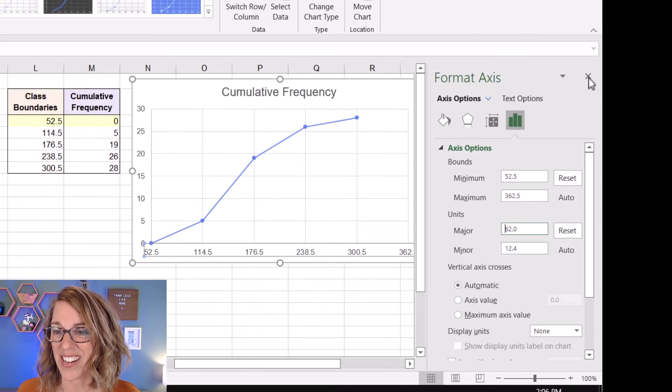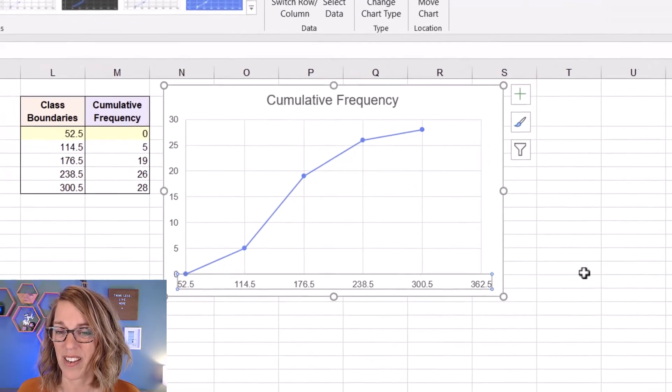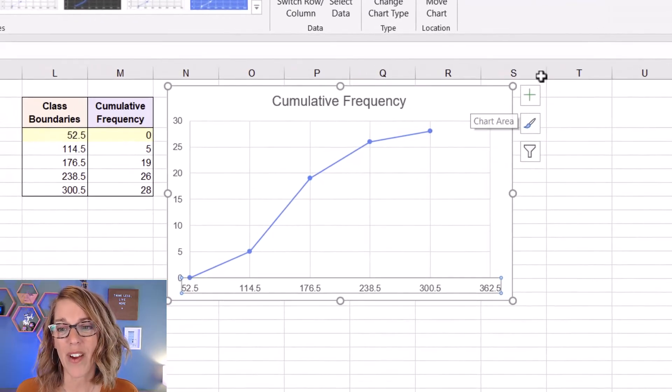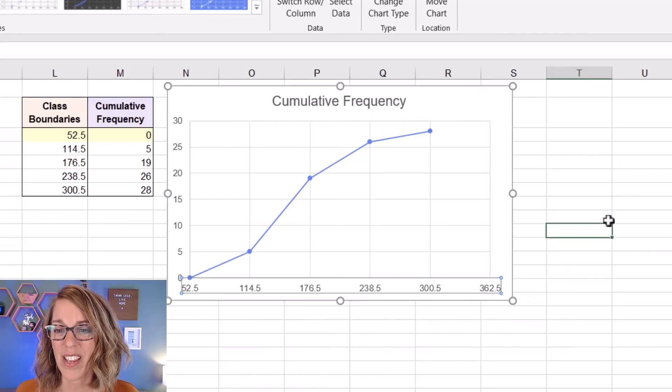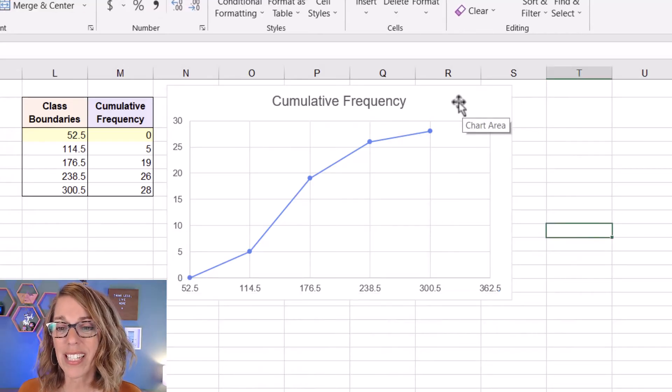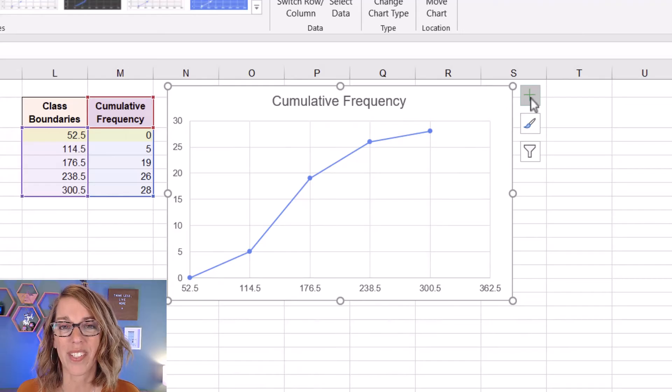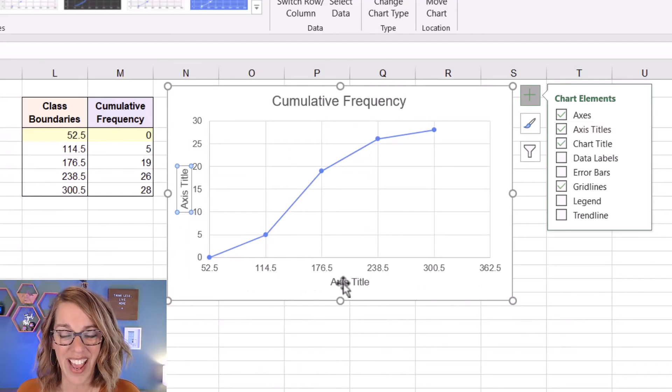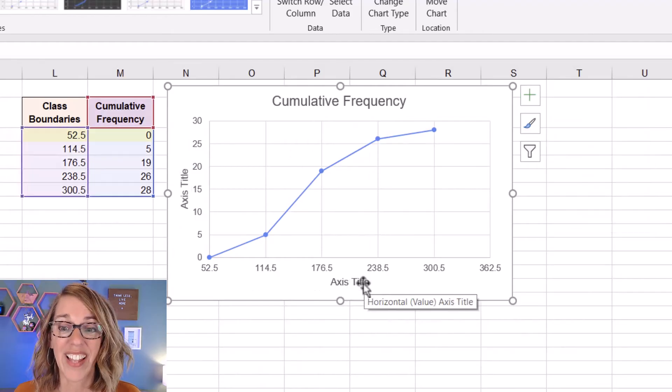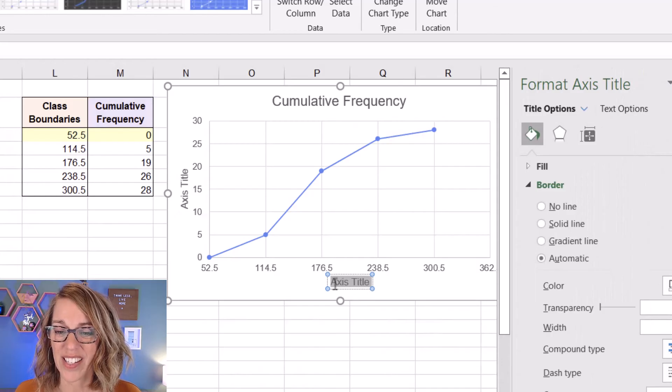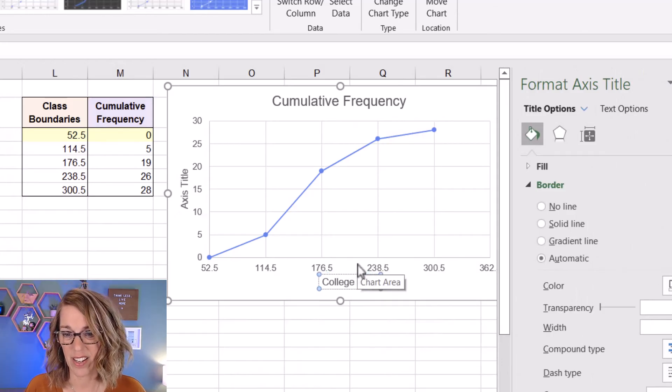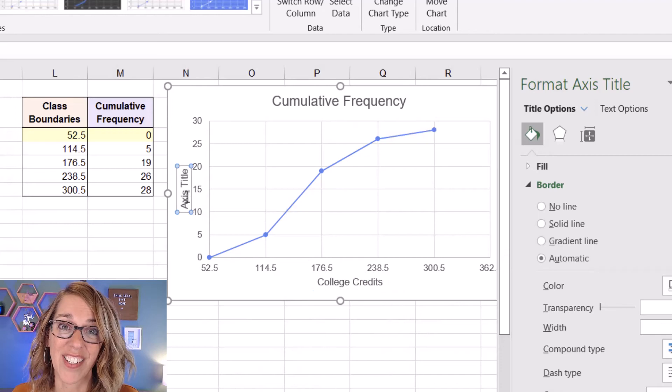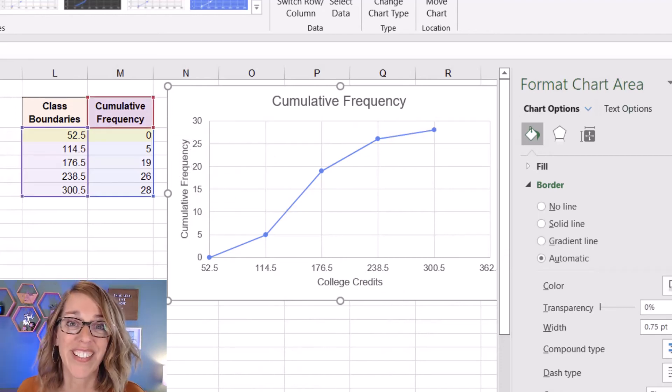And there's a few other things that I want to add. So I'm going to close this dialog box. I've already clicked on my graph. So I'm looking at that plus sign. You might need to click on your graph again. So if I just click on it once, I end up with this plus sign and I can add different elements. I definitely want some axis titles here. So now I've got an axis title for both of them. Let's change that horizontal axis to read college credits. And my vertical axis should read cumulative frequency. Two more things I can do from here.